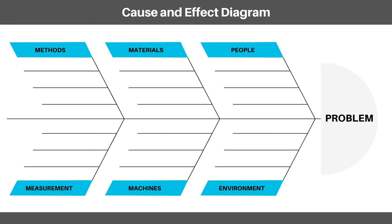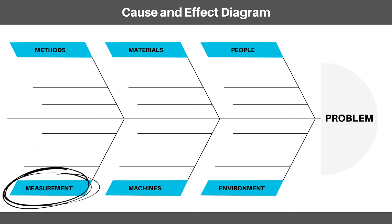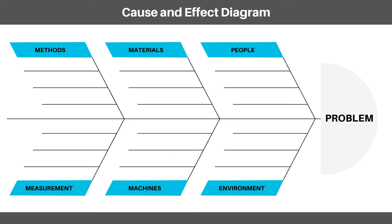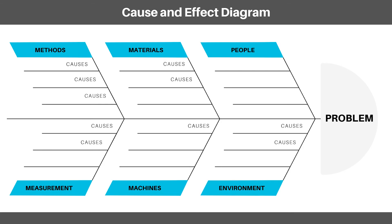You can brainstorm your own categories or use the six M's: Methods (also known as processes), Materials (such as supplies), People (originally 'Man'), Measurement, Machines or equipment, and Mother Nature or environmental factors. Focus on brainstorming and don't worry about getting everything into just the right spot. Within the categories, add the causes that impact the effect.